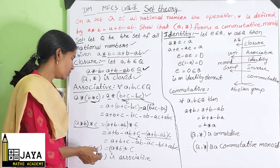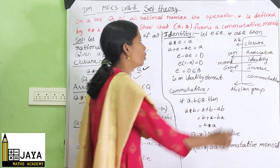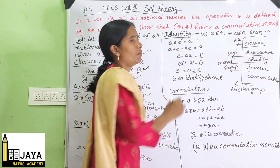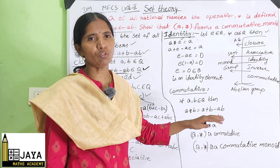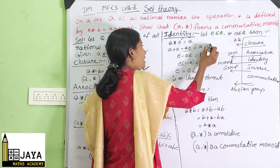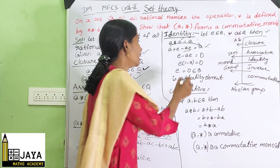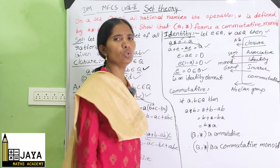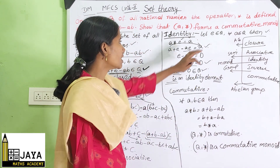For the identity property: let e ∈ Q and A ∈ Q, then A★e = A. So A + e − Ae = A, which gives e − Ae = 0, thus e(1 − A) = 0, so e = 0, which belongs to Q. Therefore e = 0 is the identity element.